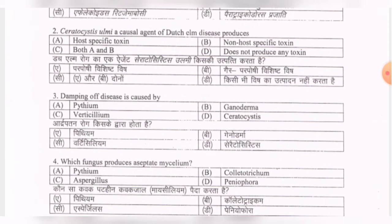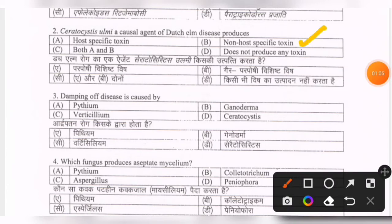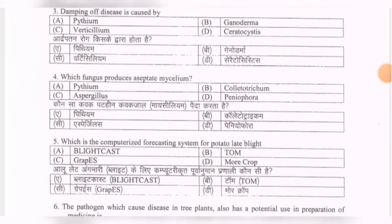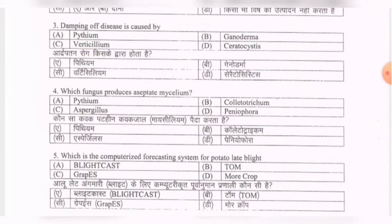Next question: Ceratocystis ulmi, a causal agent of Dutch elm disease, produces — options are host specific toxin, non-host specific toxin, both A and B, or does not produce any toxin. The correct option is B — non-host specific toxin.